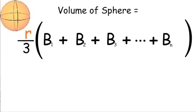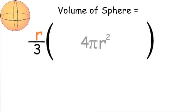So now let's go back to our simple formula and replace the sum of all bases with 4 pi r squared.